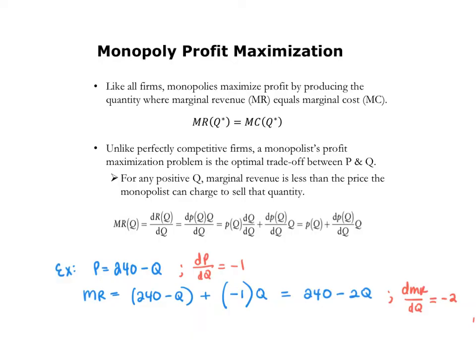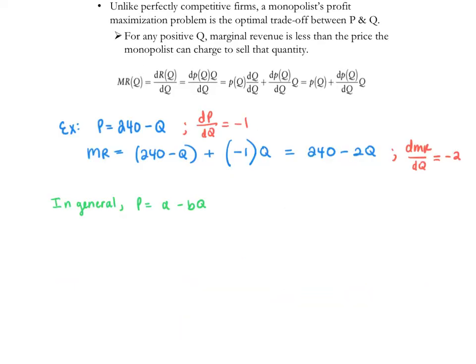I'm going to write that out in more general terms. In general, we can write demand as price equals A minus BQ. This is the equation for a linear demand curve. For any linear demand, marginal revenue will have the same intercept and double the slope as the demand curve. So when P equals A minus BQ, marginal revenue is A minus 2BQ.